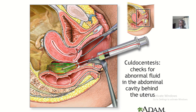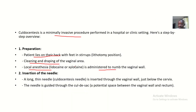Next is insertion of the needle. A long and thin needle, which is specially made for kudosynthesis — called a kudosynthesis needle — is inserted through the vaginal wall just below the cervix.